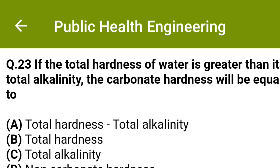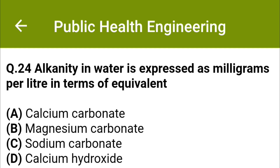If the total hardness of water is greater than its total alkalinity, the carbonate hardness will be equal to: option A: total hardness, option B: total alkalinity, option C: total alkalinity, option D: non-carbonate hardness. The correct answer is option C: total alkalinity. Alkalinity in water is expressed as milligrams per liter in terms of equivalent: option A: calcium carbonate, option B: magnesium carbonate, option C: sodium carbonate, option D: calcium hydroxide. The correct answer is option A: calcium carbonate.